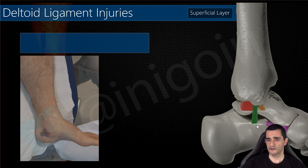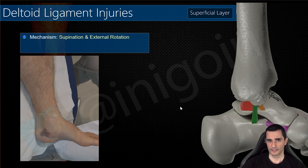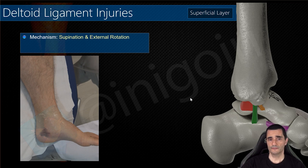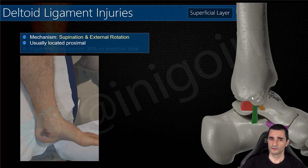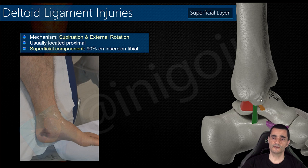In the superficial layer, we begin with the tibiocalcaneal ligament between the tibia and the sustentaculum tali. This superficial layer will be affected in mechanisms of supination and external rotation, and the location is usually proximal. 90% of the affection of the superficial layer will take place at its tibial insertion, so always check this area.